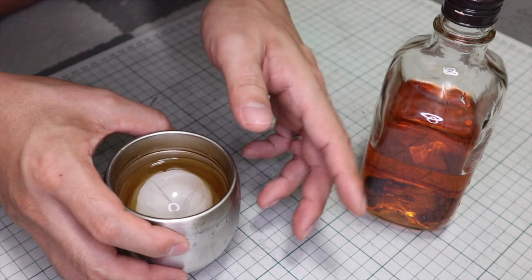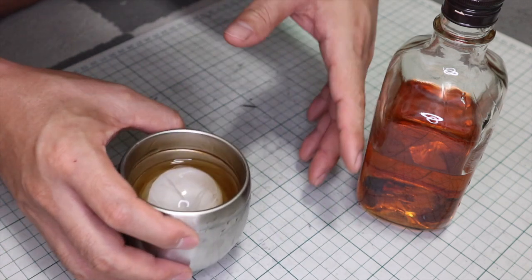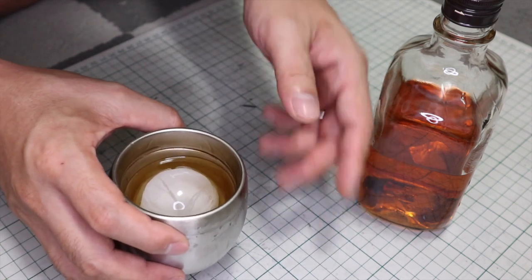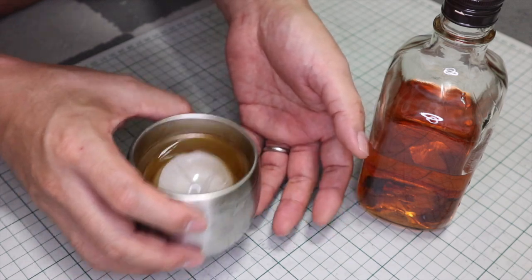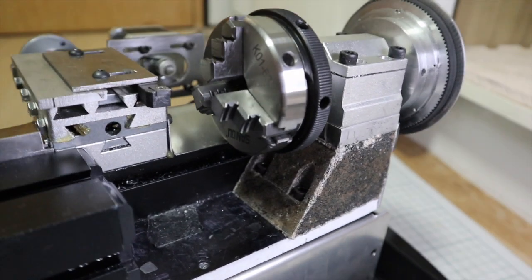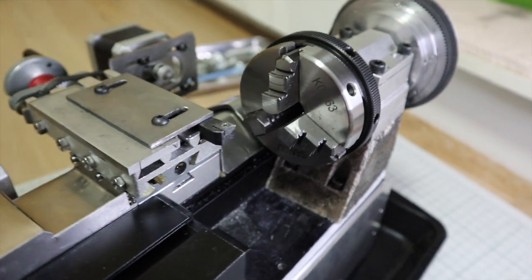However, when it comes to stable high accuracy machining, I think the strength is insufficient. It is not the strength of the spindle base that is the problem, but the overall aluminum frame that is the problem.